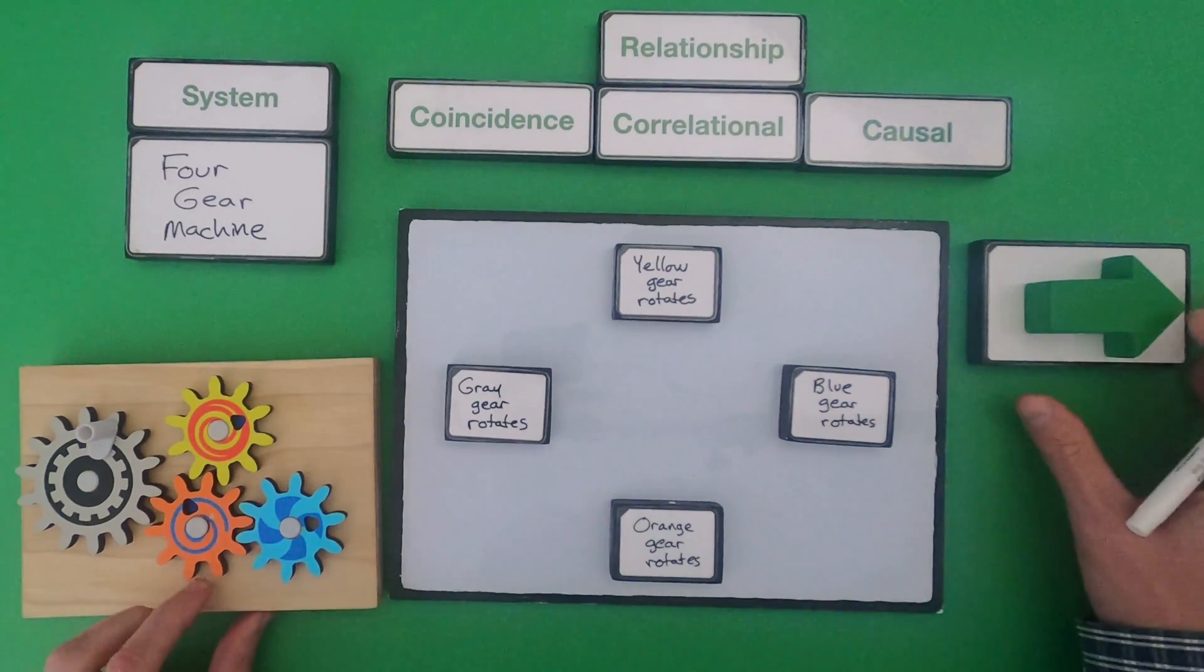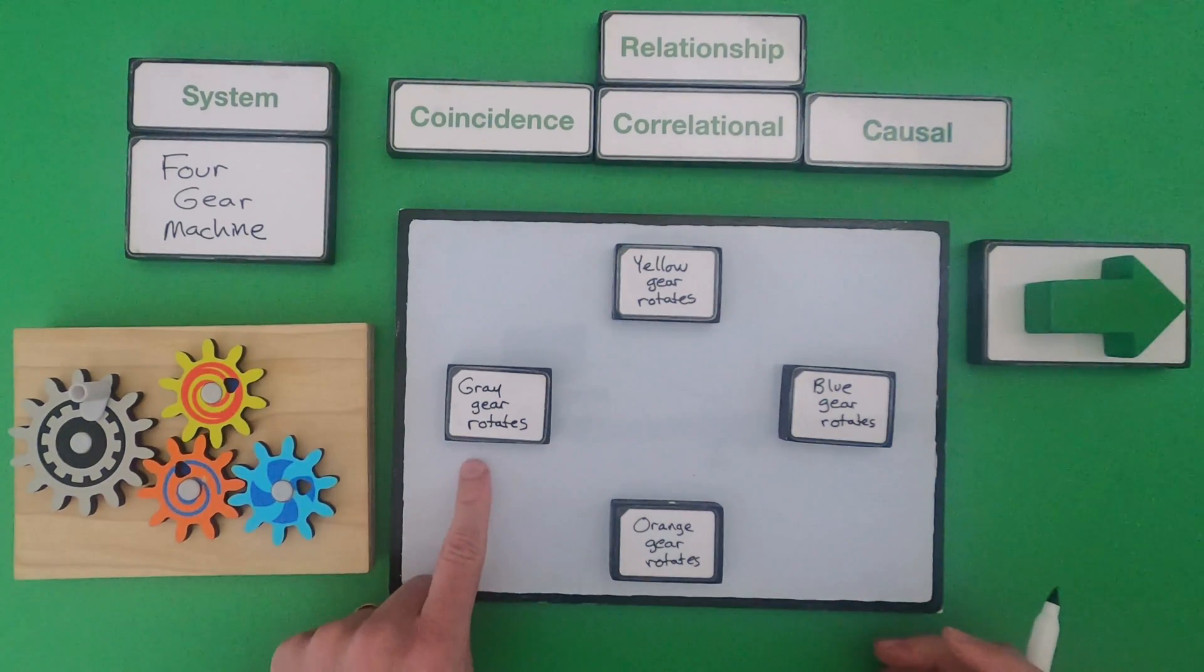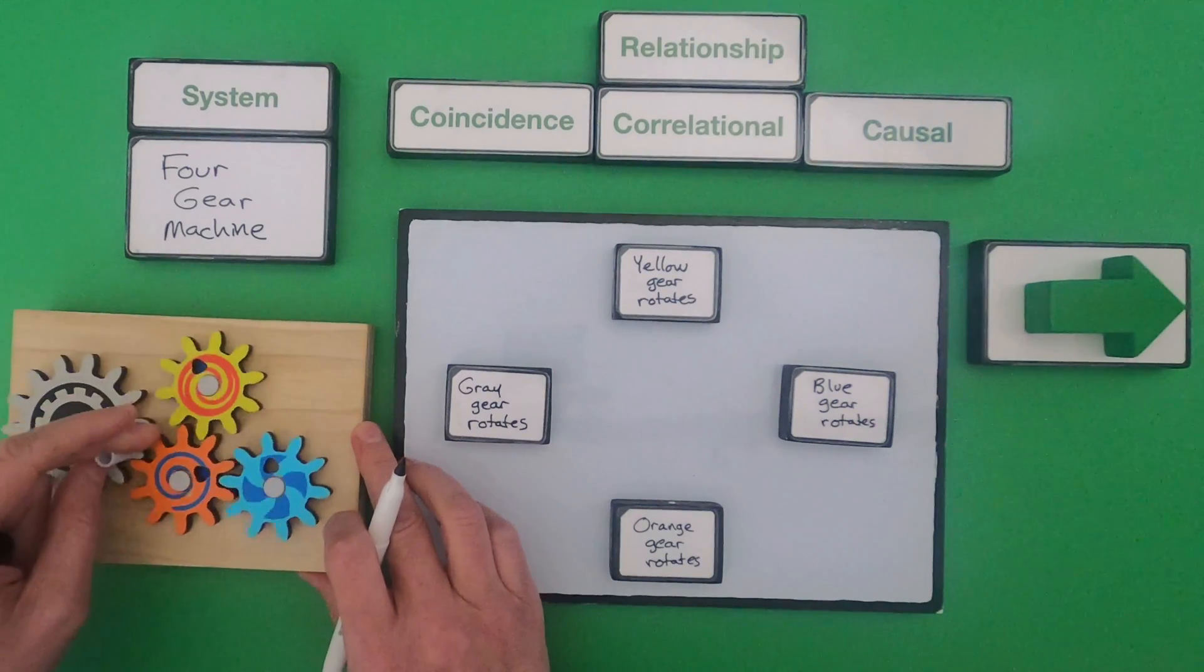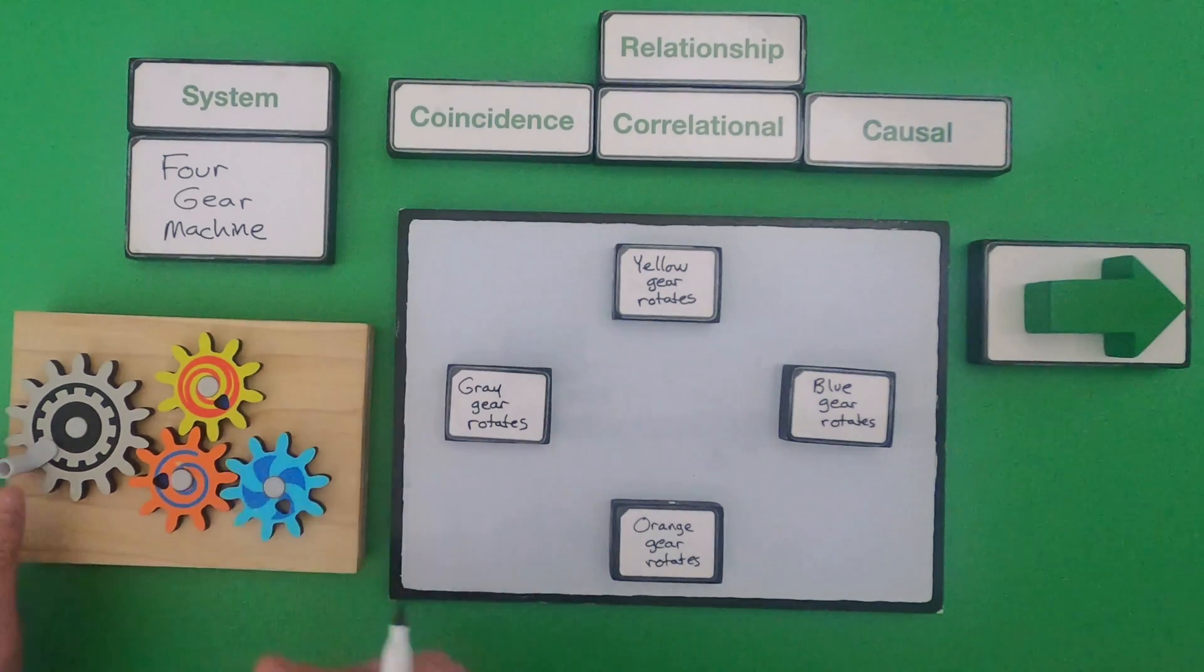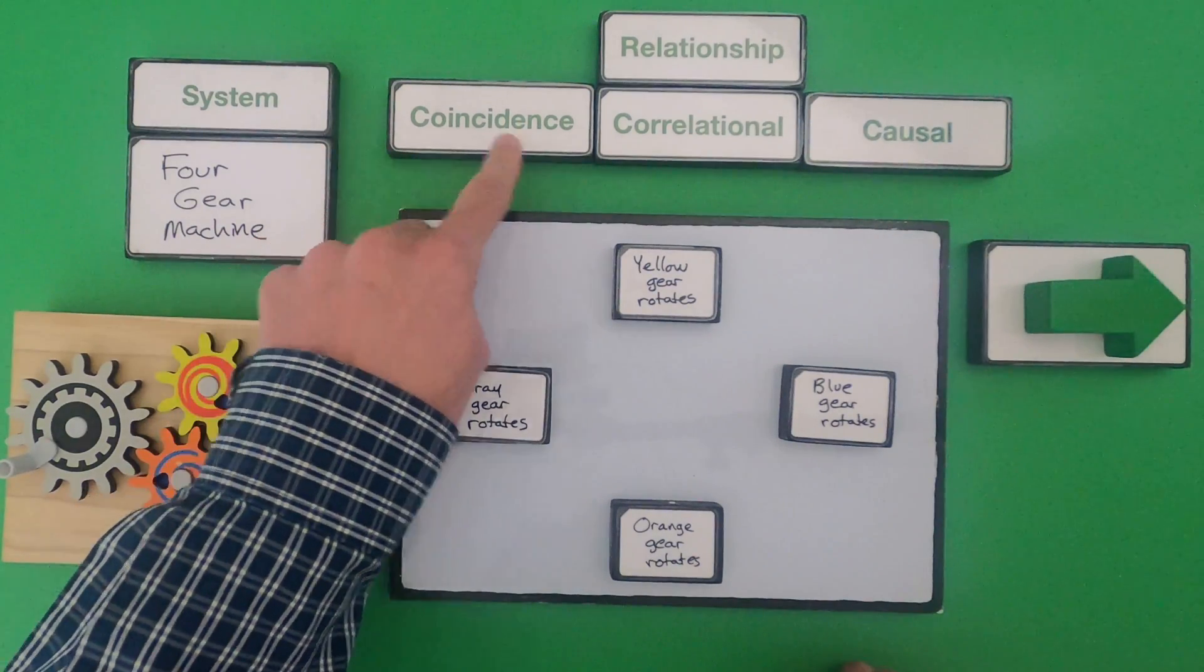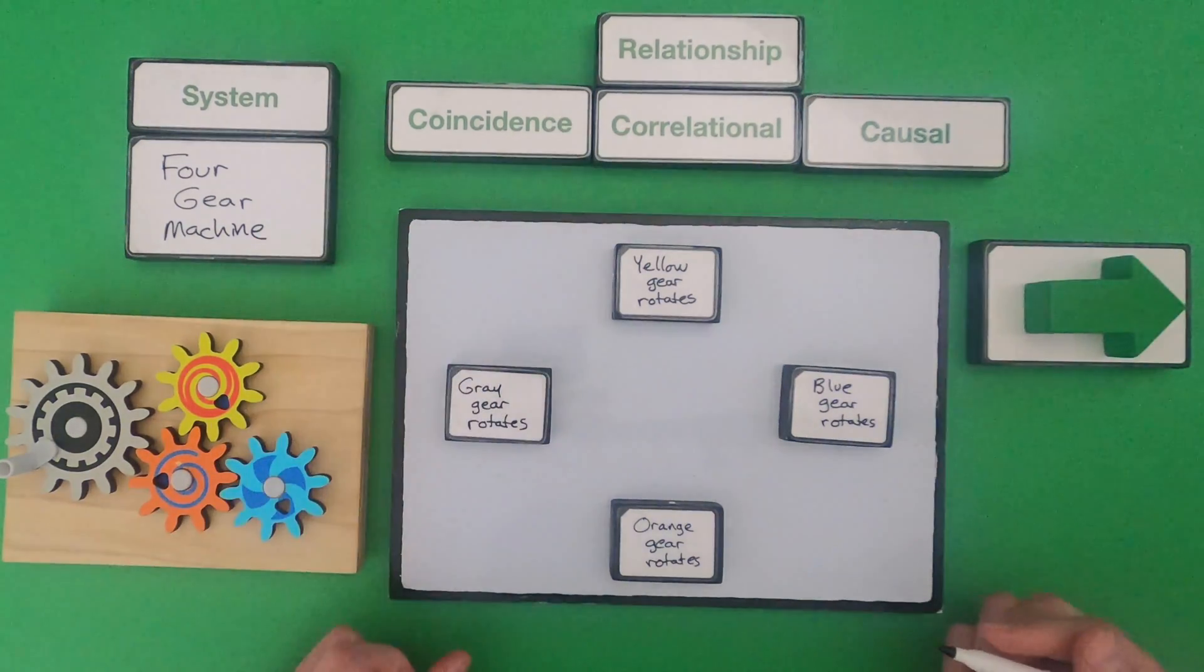So I always put the events that I see going on. So we've got the gray gear rotating. So when that gray gear rotates what I would put forward is all the others are moving. And so I don't see a lot of coincidence going on. I do see a lot of correlation and probably some causation as well.